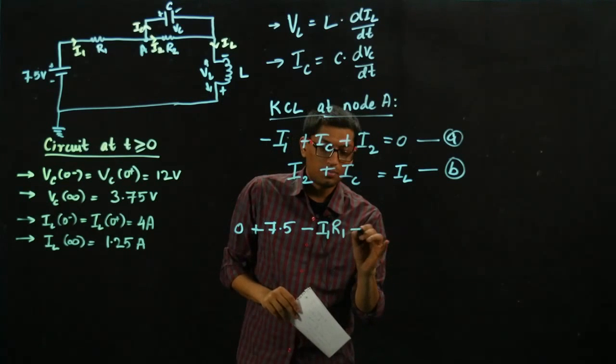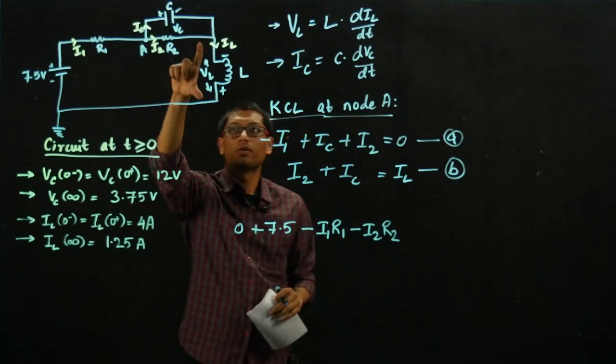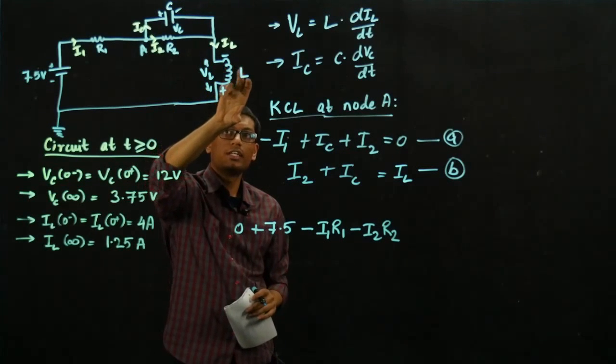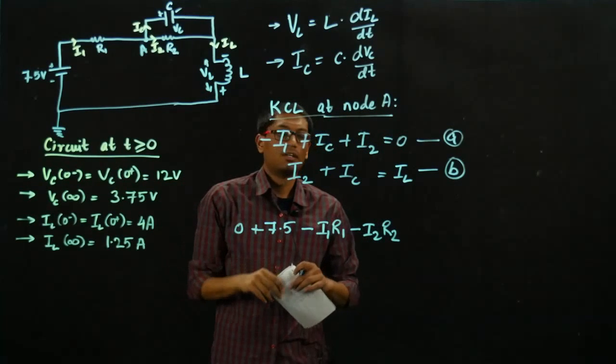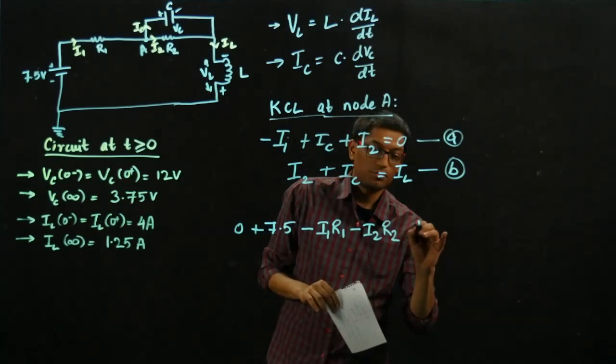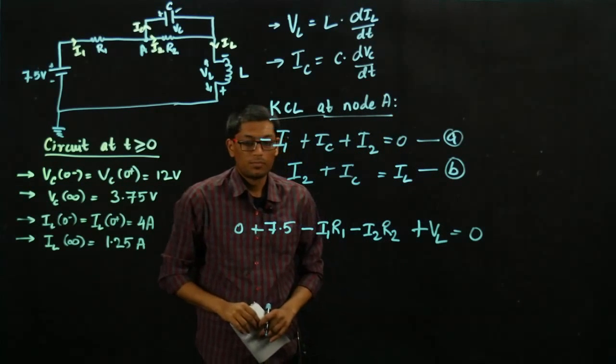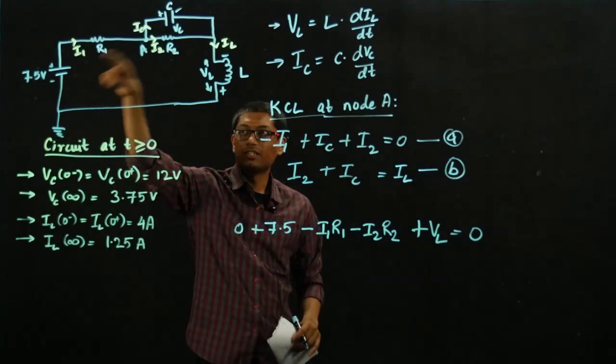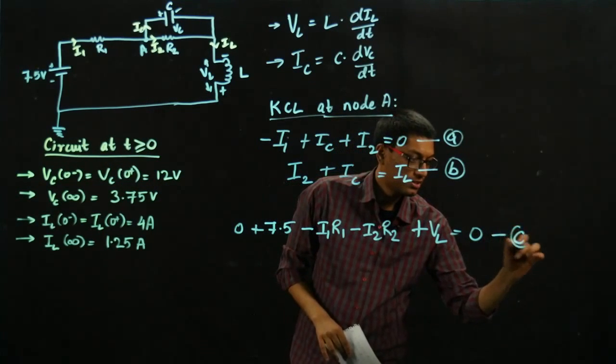Similarly, a voltage drop of I2 times R2. And now if I go across the inductor, because I already reasoned for the voltage difference to this node to be at a lower voltage than this one, I can directly write I have a voltage gain of VL. And since I traverse all through the loop, all this voltage drop has to sum to zero. I'll call this equation C.